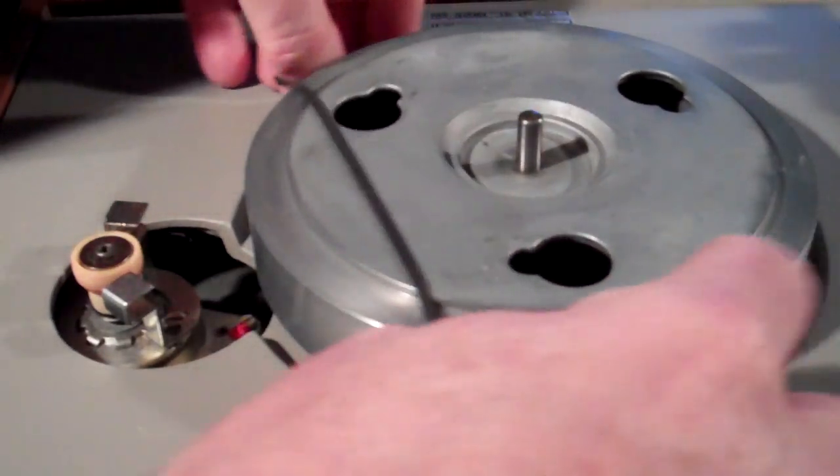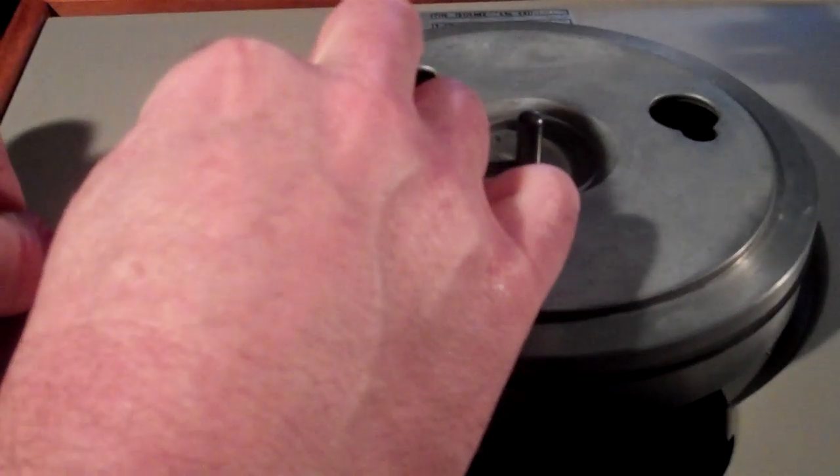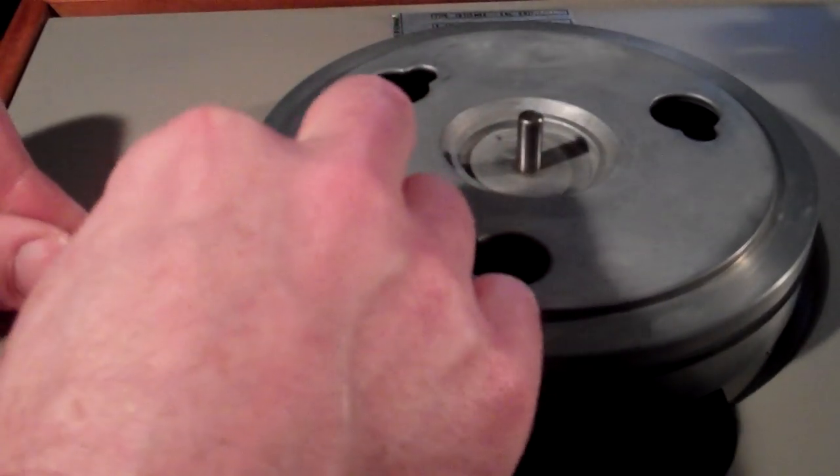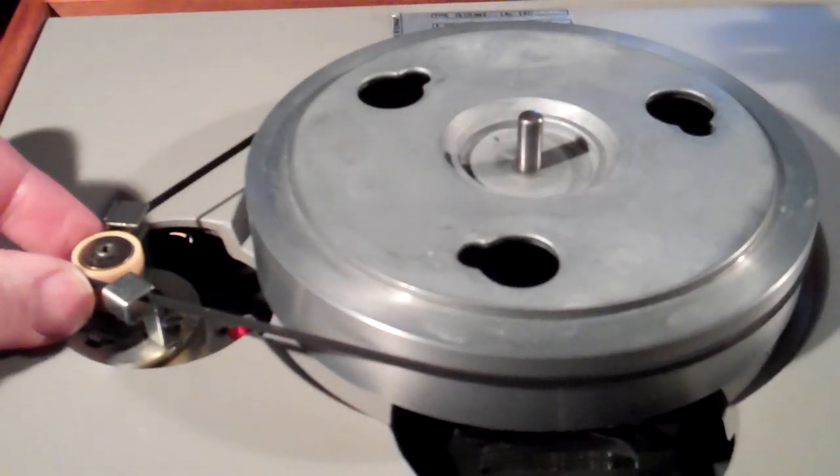Belt comes off. I usually start by going around the drive platter first. Come over, go through that first guide, come around, go through the second guide, and then again I make sure it's at the top of the pulley.